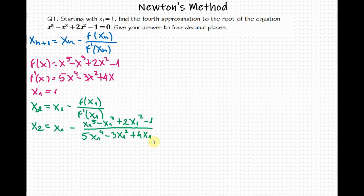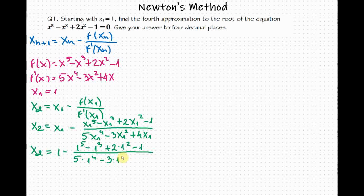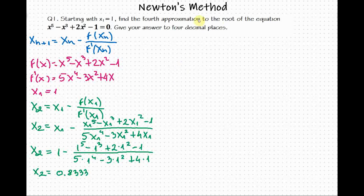Now we replace our initial approximation at the place of x, so we have 1 minus 1 raised to the power of 5 minus 1 cubed plus 2 times 1 squared minus 1, divided by 5 times 1 raised to the power of 4 minus 3 times 1 squared plus 4 times 1. Using a calculator, we get a value of 0.8333. So we have our second approximation.